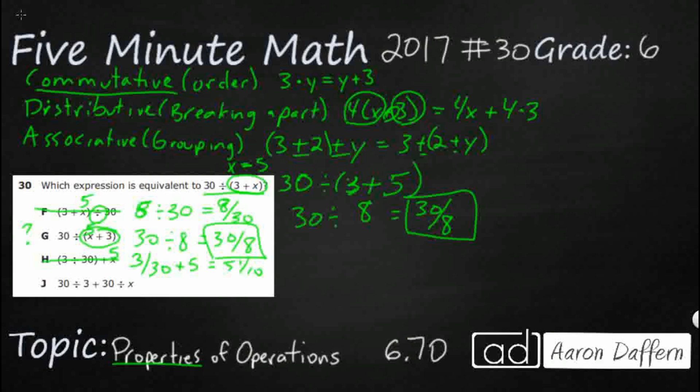And then, finally, we've got a 5 right here. So, we've got 30 divided by 3. That's 10 plus 30 divided by 5. That's 6. So, that's going to be 16, which is not 30 over 8. So, our answer is G.